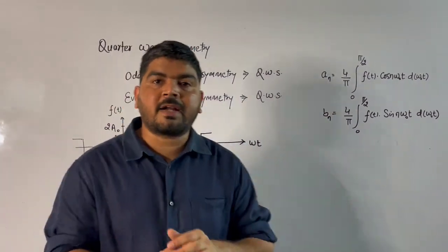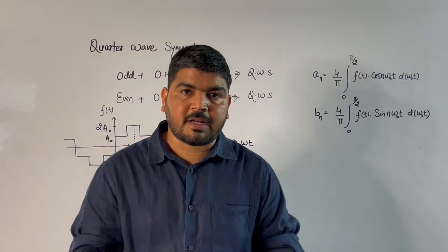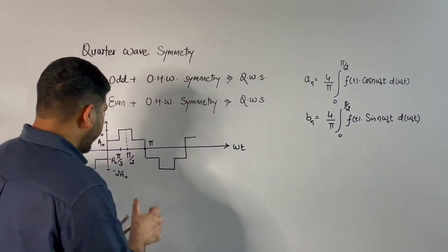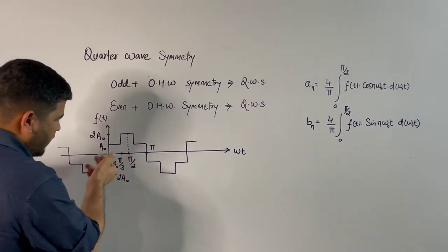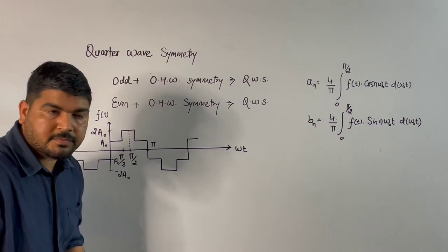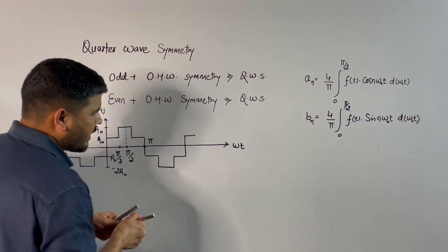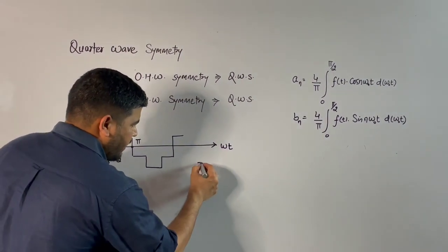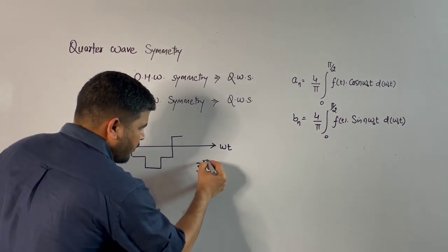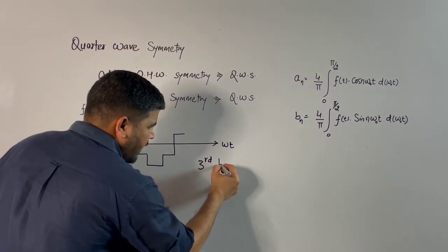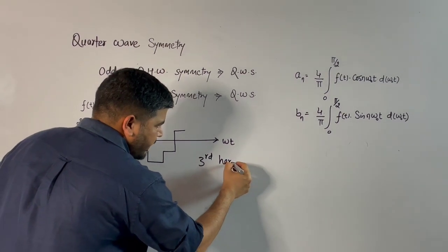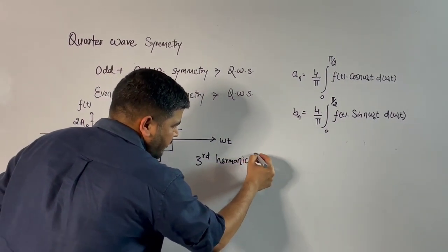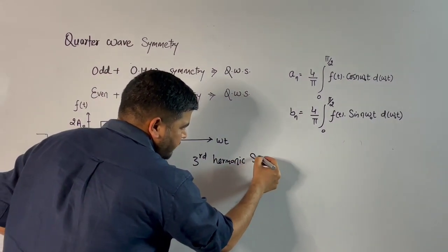Now, what is the advantage of quarter wave symmetry? Because it is an odd signal, it contains sine terms. Let's say you want to calculate the amplitude of the third harmonic sine term — the third harmonic sine term.